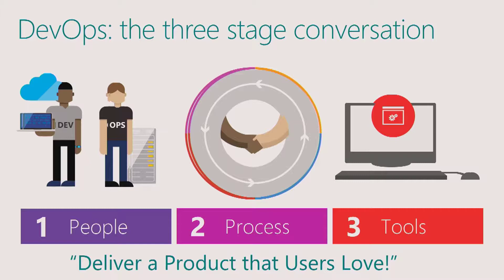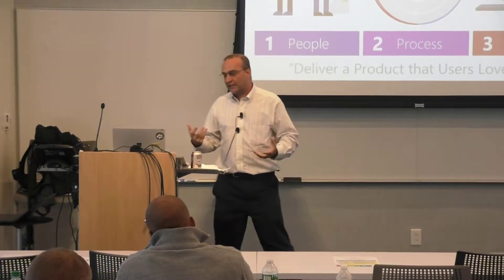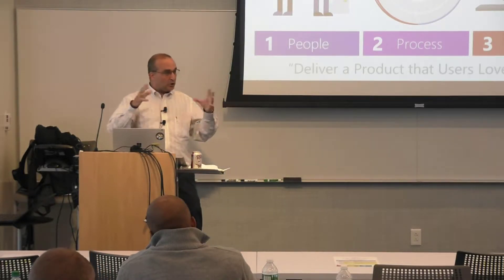DevOps is about getting the entire organization to commit to one agenda. That agenda may be something like: deliver a product that our users love. It's not about 'I did my job, now it's your problem.' It's not about 'they didn't do a good job so now I have to cover for them.' That's not DevOps — that's the way we always do things. It's about everybody having the same agenda: deliver a great product that users love. It's a people and cultural change.